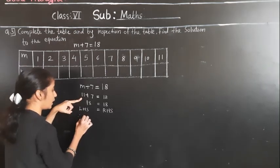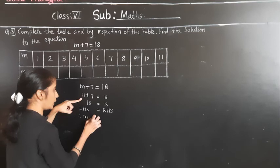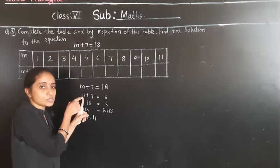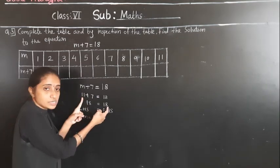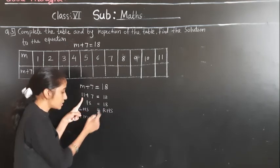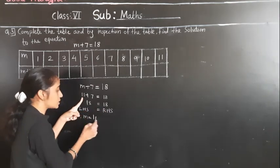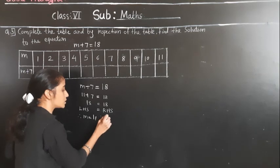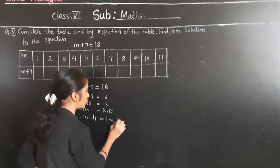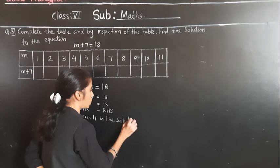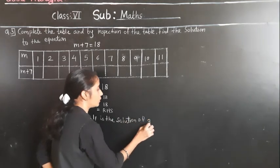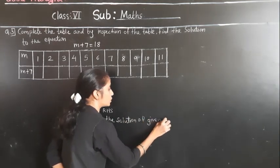I put 11 in the place of M, then this is satisfied — we got both sides equal. So M is equal to 11 is the solution of the given equation.